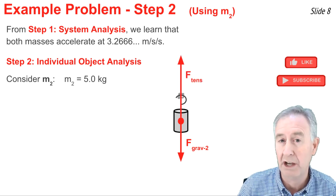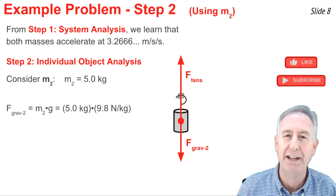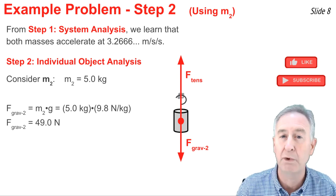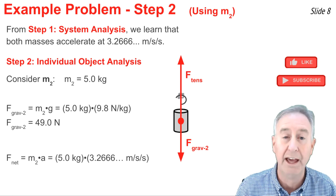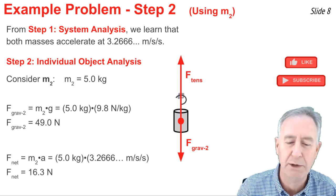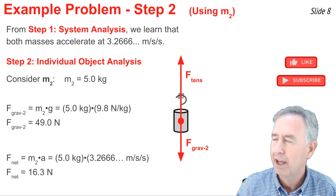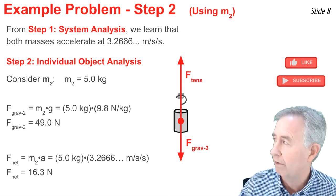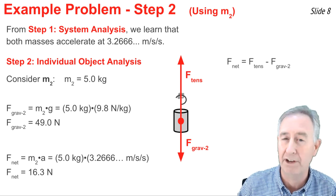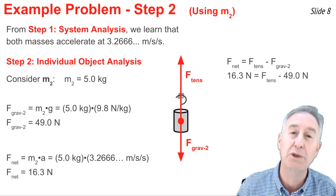Now I can calculate the downforce by going m2 times g. 5.0 times 9.8 comes out to be 49.0 newtons. And I can also calculate the F net on this object by going m times a. 5.0 times 3.2666 repeating comes out to be approximately 16.3 newtons. Now watch this. I look at my free body diagram, and I say F net equal the larger force minus the smaller force, F net equal F tension minus F grav on object 2. Now I know the value of F net, and I know the value of F grav, so I substitute it into the equation.